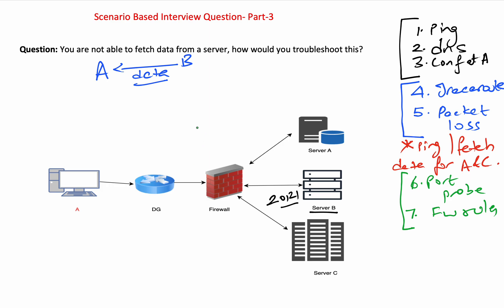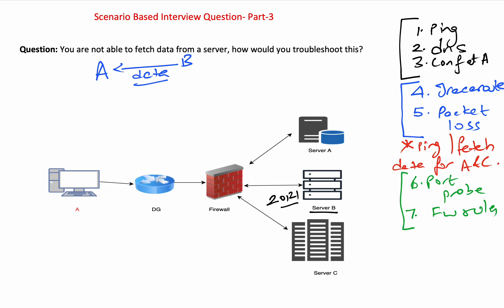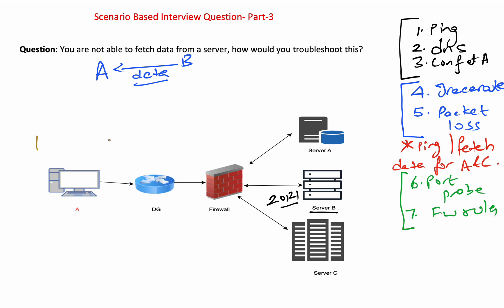Once the basic components are covered, your next step is to determine exactly where the packet is going. You check if the packet is leaving client A by doing a Wireshark capture there. If it is going out, it reaches the default gateway. If the firewall rules are passing, you continue hop by hop to the firewall — checking at each hop whether the packet is going out or not, and where exactly the policy applies.